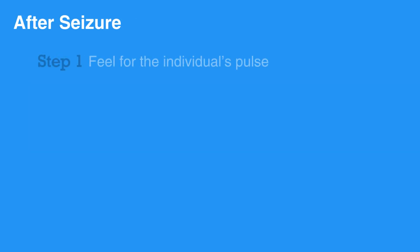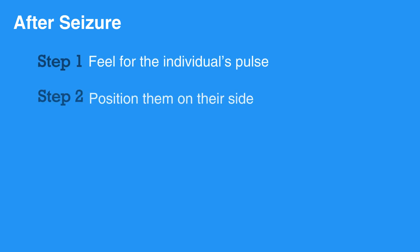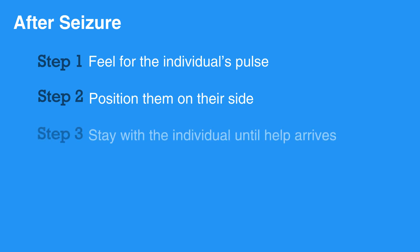After the seizure is over, feel for the individual's pulse. Position them on their side to reduce the chance of choking on vomit, as it is possible for them to throw up after a seizure. Stay with the individual until help arrives.